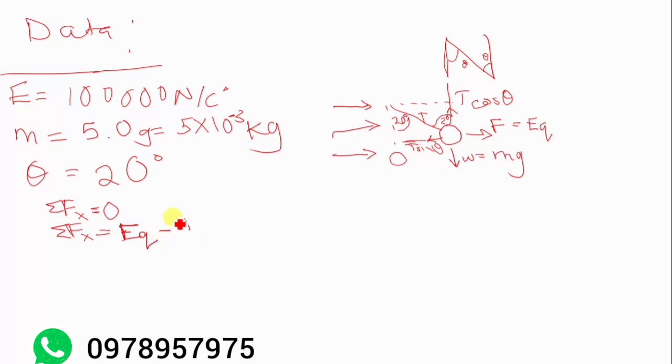Then it's been counteracted by T sine theta. Then since this is equal to zero, we can add T sine theta this side and T sine theta that side, which is the same as making it cross the equal sign.